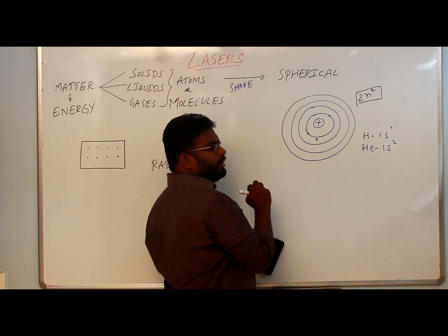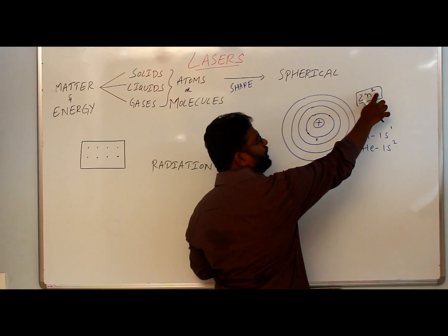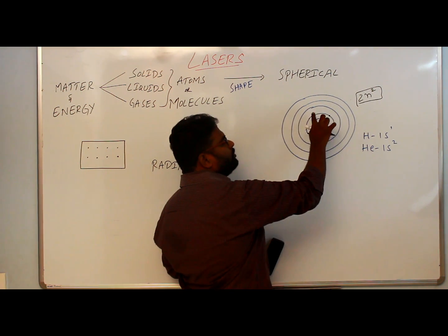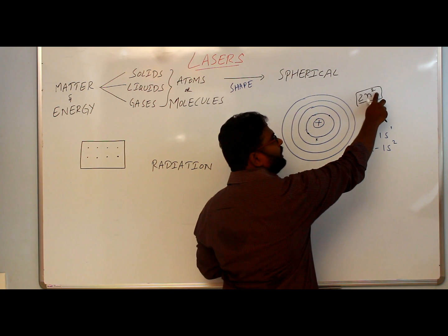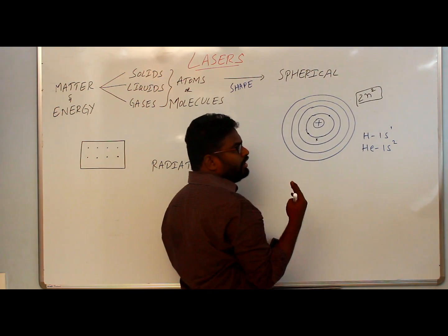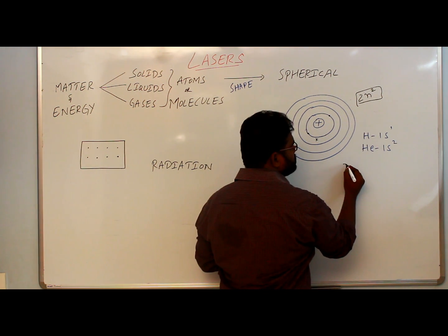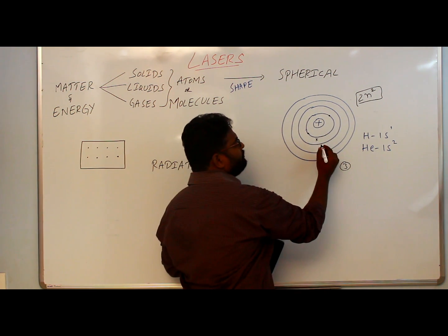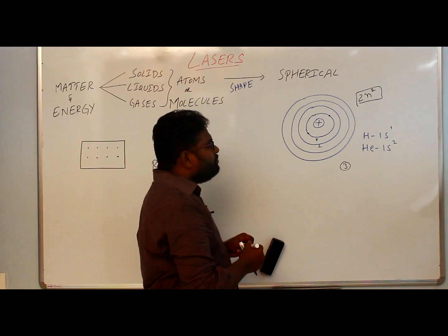This is based on the formula 2n², where n represents the number of the orbit. For the first orbit, n=1: 2×1²=2, so the first orbit can hold only two electrons. If n=2: 2×2²=8, so the second orbit can hold eight electrons. Suppose we have three electrons — first we fill two in the first orbit and then go to the second orbit.